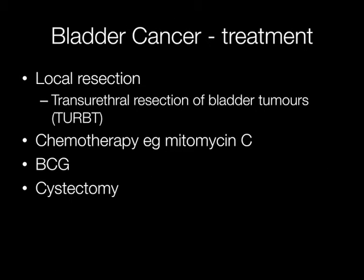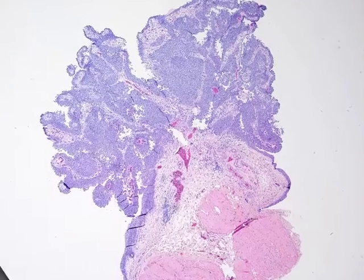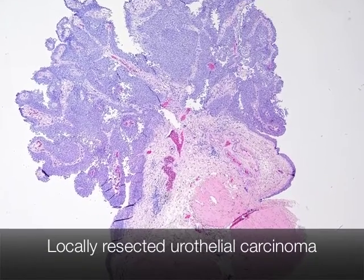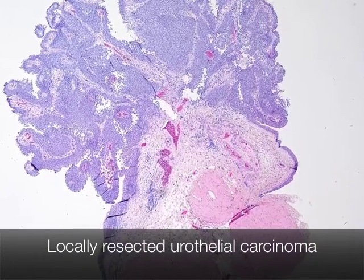Bladder cancer may be treated by transurethral resection of bladder tumour, or TURBT. Chemotherapeutic agents such as mitomycin C can be instilled directly into the bladder. In some cases BCG is introduced into the bladder for treatment. The other more radical treatment is cystectomy — that is, removal of the bladder. This is a nice example of a locally resected papillary urothelial carcinoma.